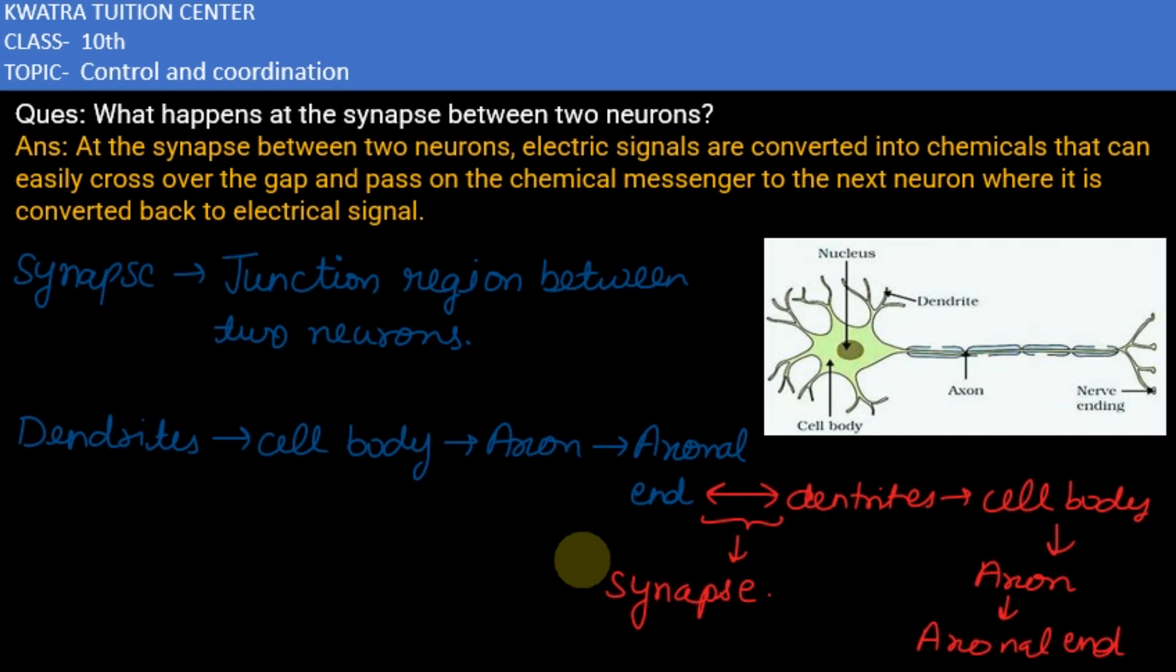Here the electrical impulse is transferred from one neuron to another neuron in the form of chemical signal. So this happens at the synapse between two neurons. Thank you.